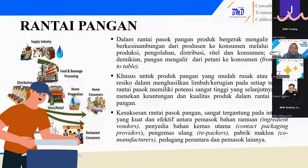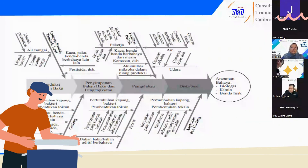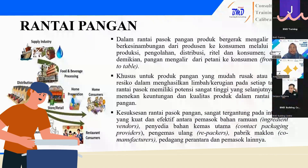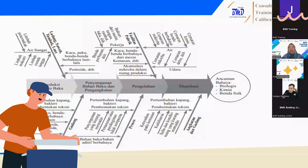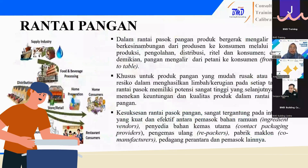Kemudian tadi dari distribusi, retail, kemudian home preparation, kemudian ada home consumer atau restoran. Yang tadi sudah sedikit saya bahas terkait ancaman bahaya biologis, kimia, dan benda asing dari proses rantai pangan. Pada saat penyimpanan atau pada saat kita menyetok bahan baku, itu bisa memungkinkan terjadinya rusak atau busuk, kemudian expired. Ada risiko-risiko atau kemungkinan ancaman bahaya yang muncul pada saat proses rantai makanan atau rantai pangan.